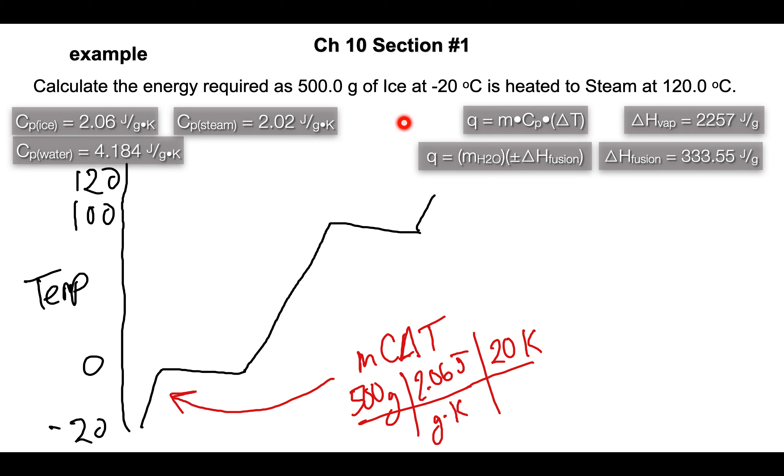Okay, so then now we have ice at zero degrees but we need to convert ice to water before we can heat it up. So now we're gonna use delta H. Our mass is still 500 grams. Delta H for fusion - remember fusion is ice to liquid or liquid to ice. Delta H of fusion is 333.55 joules per gram.